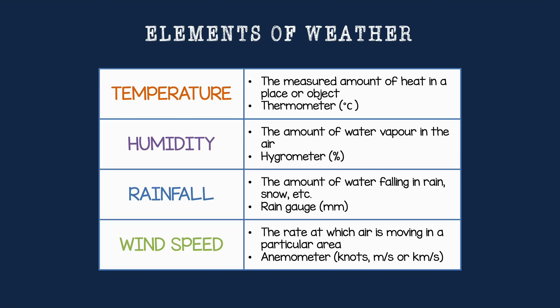Rainfall is the amount of water falling as rain, snow, or ice, and this is measured using a rain gauge in millimeters — you might have seen one of these in a garden. Wind speed is the rate at which air is moving in a particular area, and it's measured using an anemometer. This is measured in knots, kilometers per hour, or meters per second.